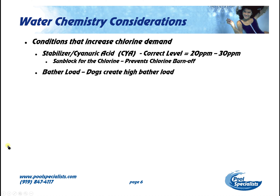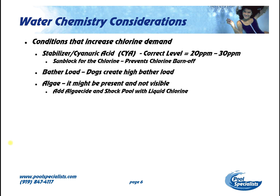Another thing that affects chlorine demand is bather load. How many kids and adults are going in the pool? Are they sweating? Do you have dogs going in the pool? Dogs create an incredibly high bather load — the numbers show that one dog equals 25 people. Algae may also be present and not visible, eating away at your chlorine. To address this, simply add some algaecide and shock — preferably liquid chlorine.